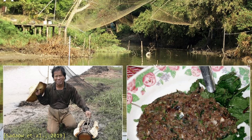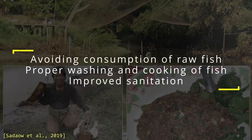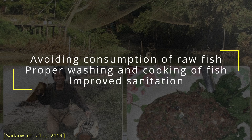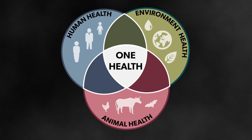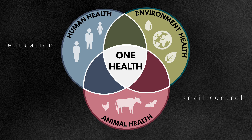Preventing Clonorchis and Opisthorchis infection involves strategies aimed at reducing exposure to contaminated freshwater fish. Key measures include avoiding the consumption of raw or undercooked fish, proper washing and cooking of freshwater fish including proper preparation before cooking, and improved sanitation to prevent contamination of freshwater resources. The One Health approach is being applied to control liver fluke infections, where efforts to control the disease in humans, animals, and the environment are integrated, including snail control in freshwater environments and education about the risks of consuming raw fish.